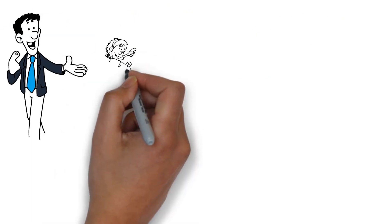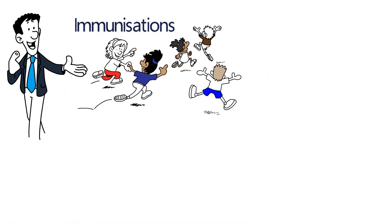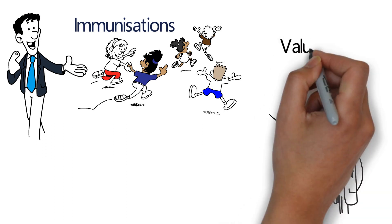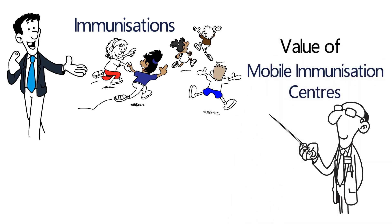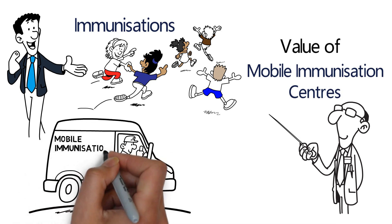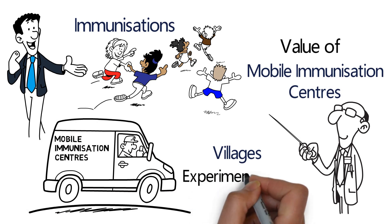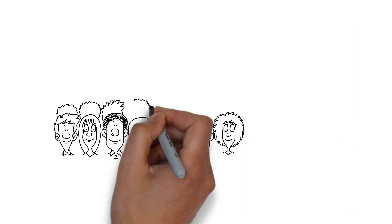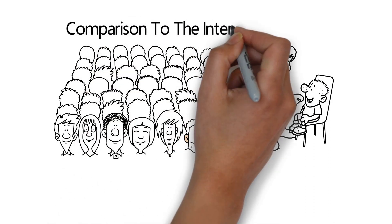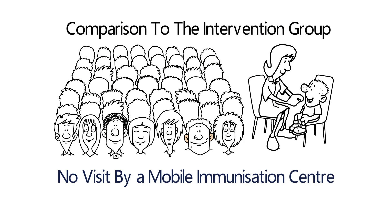For example, to find out the best way to ensure as many children as possible receive necessary immunizations to prevent life-threatening diseases, you could test the value of mobile immunization centers. To do this, arrange for the mobile immunization centers to only visit villages selected as the experimental group. The control group would receive services as normal and would serve as a comparison to the intervention group, with no visit by a mobile immunization center.